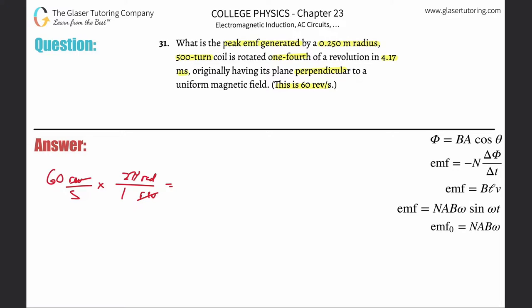So there's basically going to be 120π. You can leave it in terms of π, it doesn't matter. This is 60 times 2 times π. I'm just going to evaluate it: 377 radians per second.